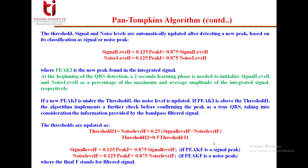Threshold 1 is calculated as: threshold_1 = noise_level_1 + 0.25·(signal_level_1 − noise_level_1), where noise_level_1 is the running estimate of the noise level in the integrated signal and signal_level_1 is the running estimate of the signal level. The threshold and signal and noise levels are automatically updated after each new detected peak based on whether it is classified as signal or noise. Signal level and noise level are updated as: signal_level_1 = 0.125·peak_1 + 0.875·signal_level_1, and noise_level_1 = 0.125·peak_1 + 0.875·noise_level_1, where peak_1 is the new peak found in the integrated signal. At the beginning, a 2-second learning phase initializes these levels as percentages of the maximum and average amplitude of the integrated signal.